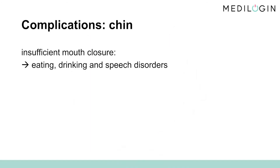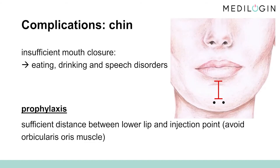Chin. Although the risk of complications after botulinum toxin treatment of the chin is low, insufficient closure of the mouth can result from accidental paralysis of the orbicularis muscle. This can result in eating, drinking, and speech disorders. As prophylaxis, make sure that the distance between the injection point on the chin and the lower lip is not too small. For this reason, you should start with a small dose and repeat if necessary.